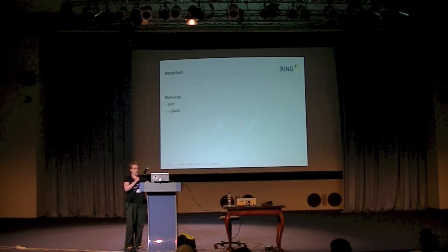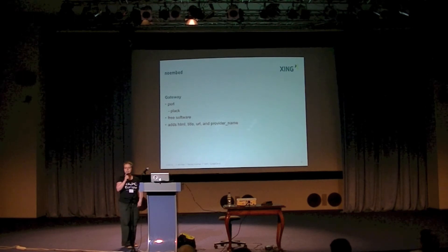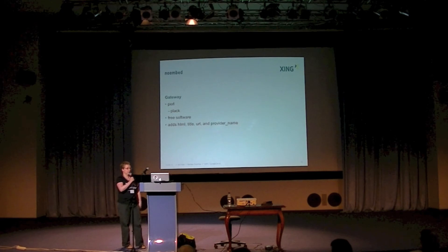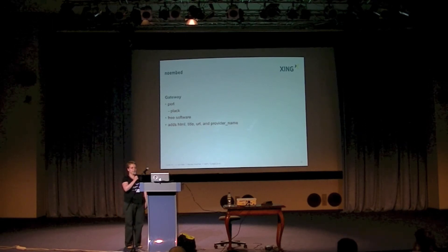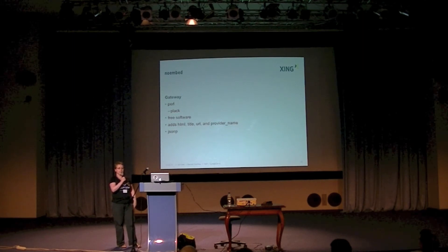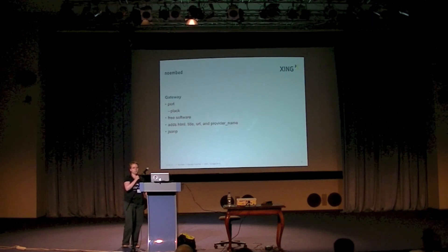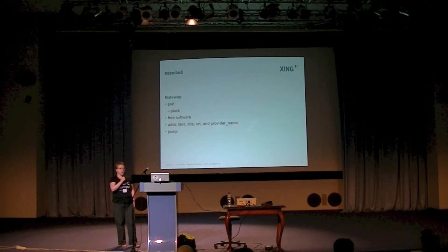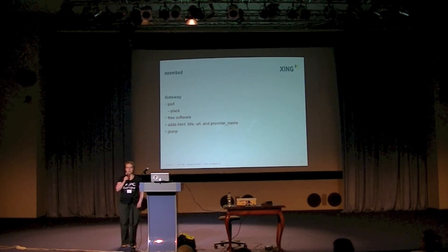The noembed gateway is written in Perl — actually it's a Plack application, it's free software, and it adds some useful functionality. For example, it ensures that every response you get contains certain fields. We've already seen that a response from Flickr normally does not contain an HTML field; noembed adds this field for you so that your consumer can rely on receiving those fields. Another functionality noembed adds is JSONP. If you want to build a client-side consumer, you are hit by the same-origin policy and need to make cross-domain AJAX requests. One way to solve this is to use JSONP, which is not part of the oEmbed specs. Some oEmbed providers offer it anyway, but if you send your request through the noembed gateway, you always have it available.